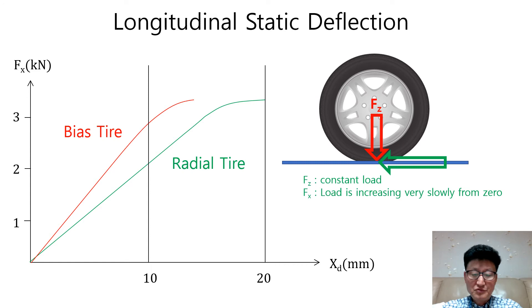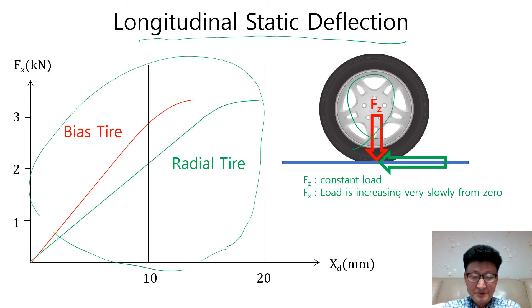Let's move to the longitudinal static deflection. Here we have a force displacement curve. We can get this result by increasing the load very slowly from zero with a constant load in Z direction. As in the vertical loading, radial is also softer than bias tire here.